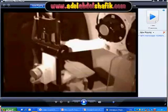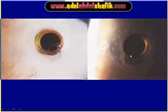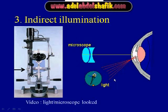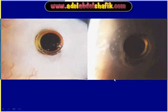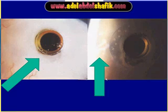By dealing with this knob, you can make the microscope focus in one location and then change the light to the side of the point of focus. This is known as indirect illumination.